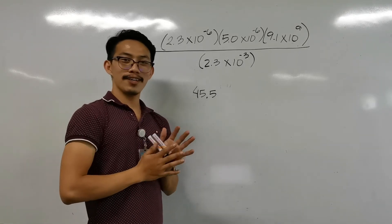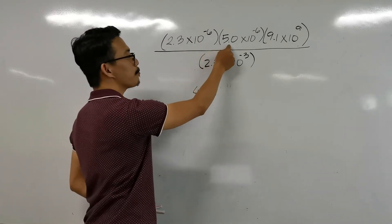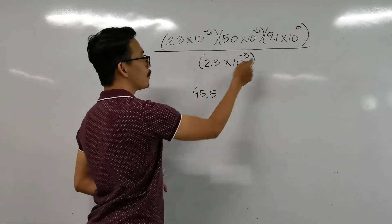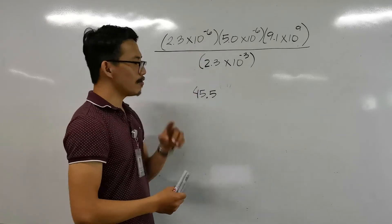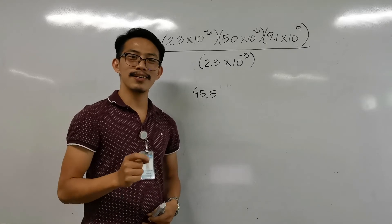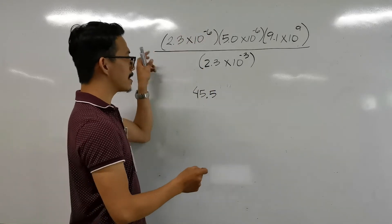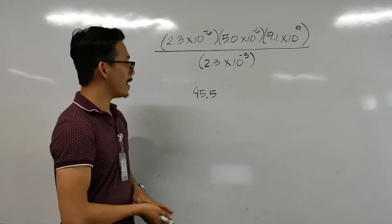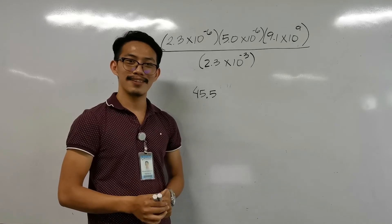Let's look at a problem involving multiplication and division with scientific notation. We have 2.3 × 10⁻⁶ multiplied by 5.0 × 10⁻⁶ multiplied by 9.91 × 10⁹, all over 2.35 × 10⁻⁶. Take note of the operations — we only have multiplication and division, so there is one rule: the least number of significant figures. We input that in our calculator, and it gives us 45.5.